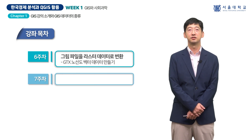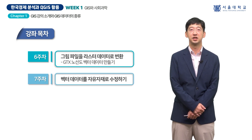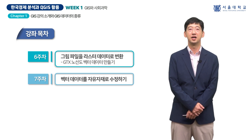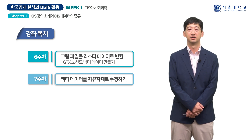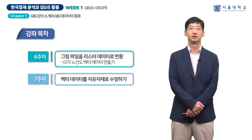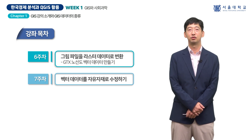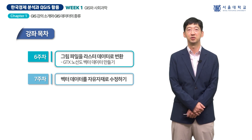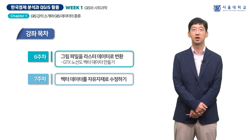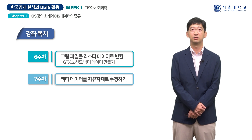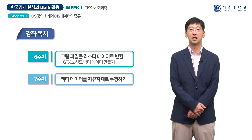7주차에서는 수동적으로 주어진 GIS 데이터를 사용하는 것에서 벗어나 벡터 데이터를 직접 수정하는 다양한 방법을 보여드립니다. 실습을 통해 좌표를 변환하거나 두 개의 행정구역을 합치는 작업 등을 할 예정입니다. 이를 통해 GIS 데이터를 내가 원하는 대로 자유자재로 변환하여 연구나 프로젝트에 활용할 수 있게 됩니다.